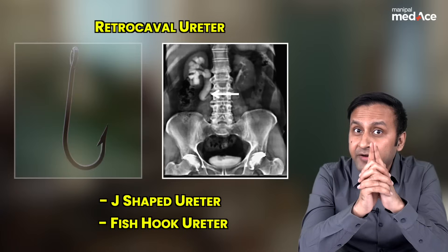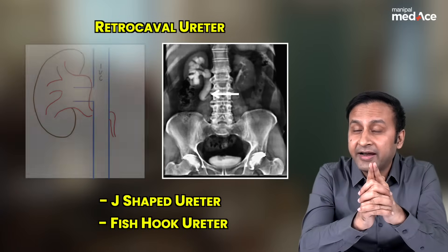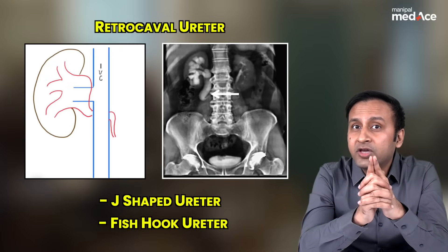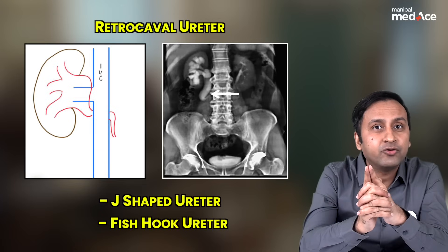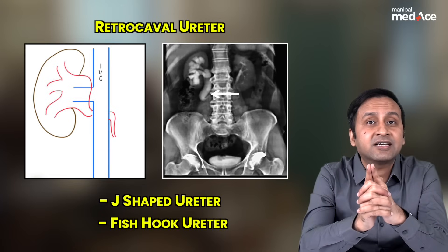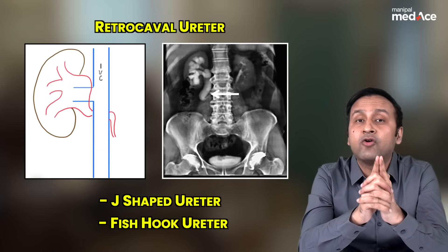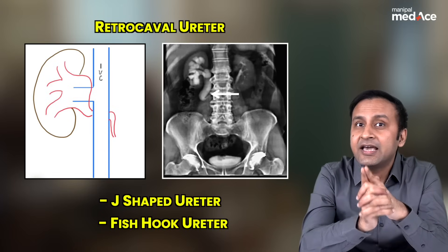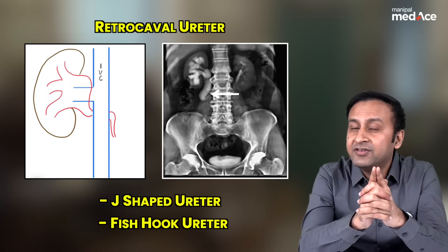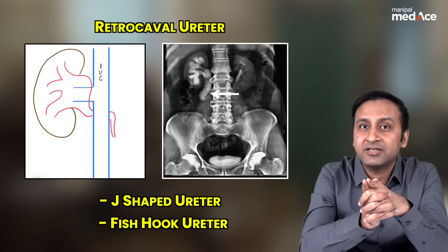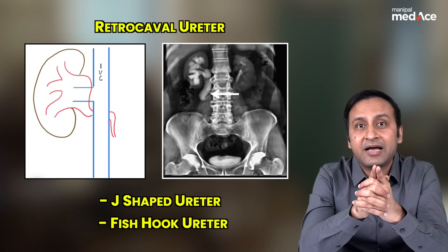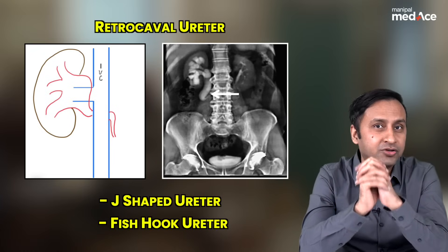A very important finding to remember: retrocaval ureter is not an abnormality of the ureter. Rather, it is a congenital anomaly of the IVC in which the IVC passes anterior to the ureter, rather than passing posterior to the ureter.